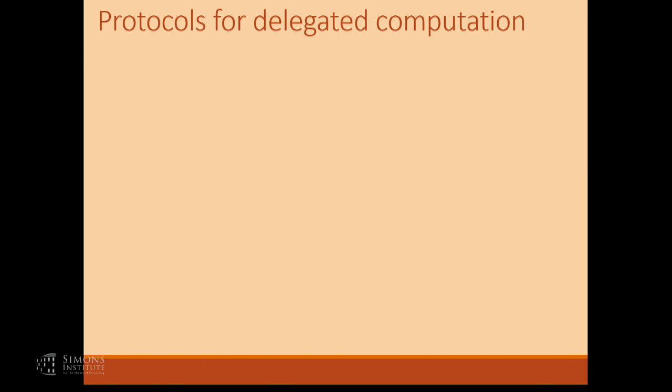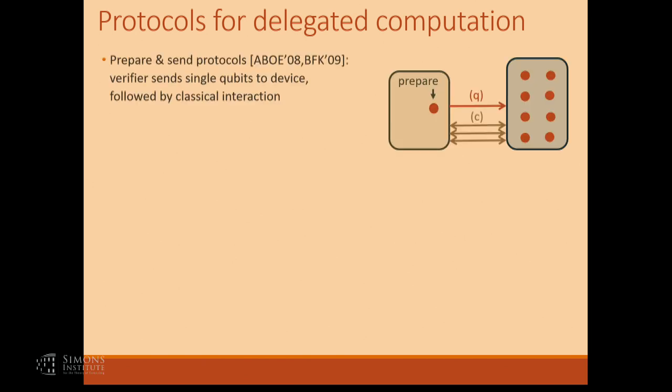There's been a lot of work on that question and it's very challenging. Some of the first works are due to Aronov and Cotter and then Broadbent, Fitzsimmons, and Kirchheff, where they design protocols with the following flavor: the verifier still has a very small quantum computer, but the only thing required is the ability to prepare one qubit at a time and send it to the prover. The prover makes the computation based on these states, and then verification happens through classical communication.